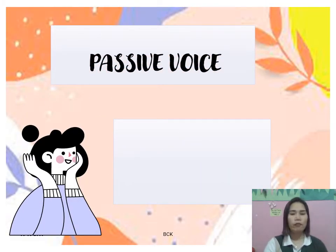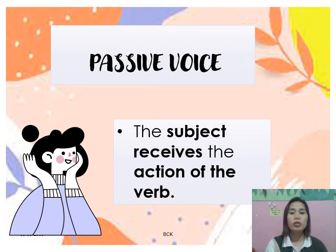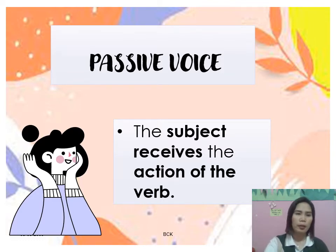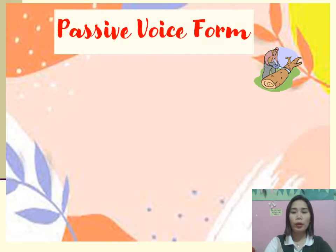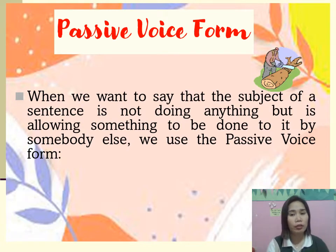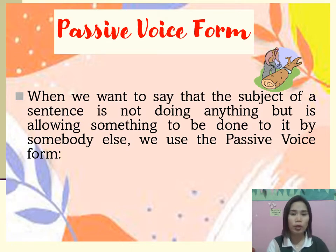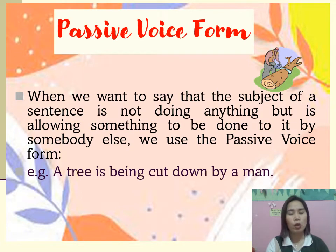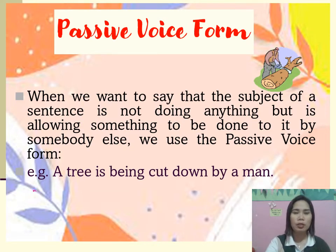Now let's have the passive voice. In passive voice, the subject receives the action of the verb. For example: 'Dinner was made by my little brother' — the subject receives the action. When the subject is not doing anything but is allowing something to be done to it by somebody else, we use the passive voice. The subject is not the doer. For example: 'A tree is being cut down by a man' — the subject is tree, but the tree is not the doer; it is still the man.